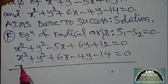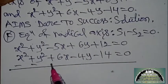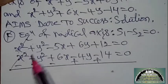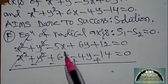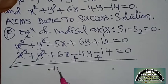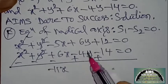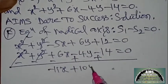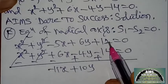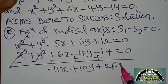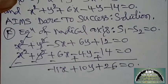So the relation is minus. x² cancels, y² cancels. −5x − 6x = −11x; 6y + 4y = 10y; 12 + 14 = 26. So −11x + 10y + 26 = 0.